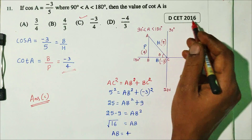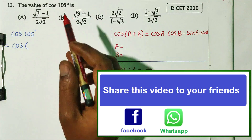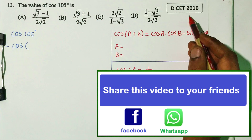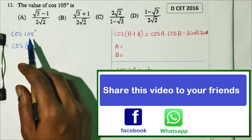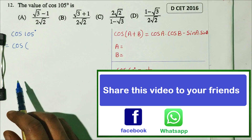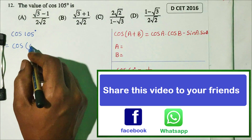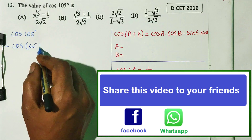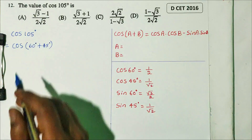Question number 12. The value of cos 105 degrees is — DCT 2016 question. First, 105 can be written as 60 plus 45. So we use compound angle formula with A equals 60 and B equals 45.